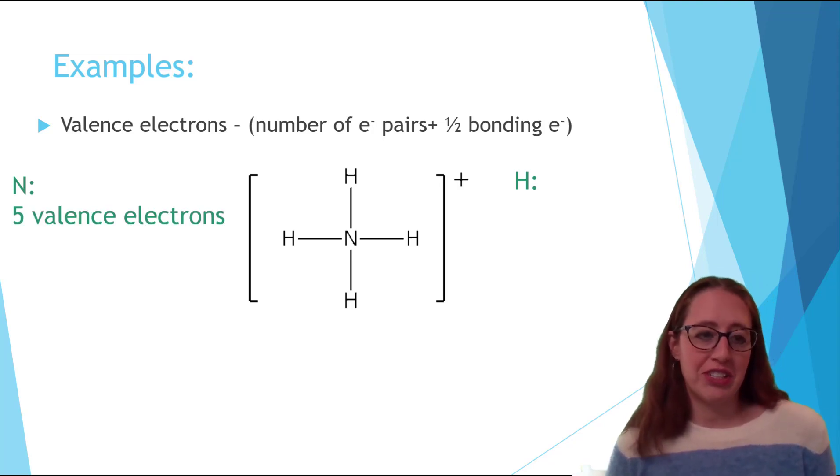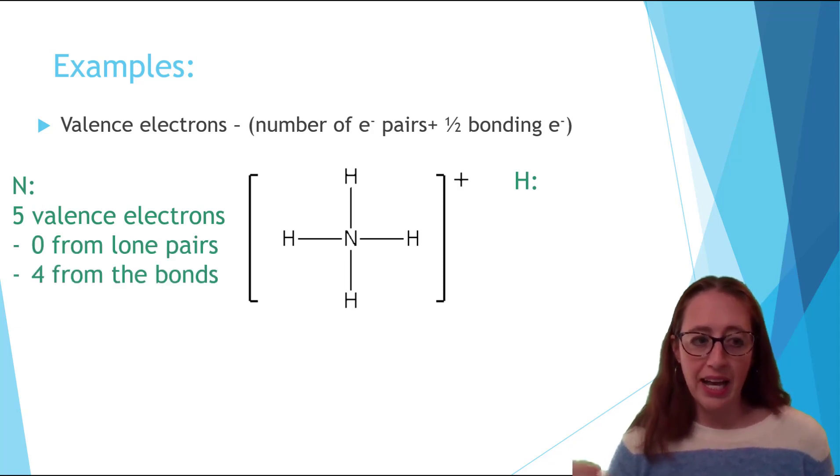So let's do nitrogen first. Nitrogen has five valence electrons which we can get from the periodic table. But as a part of this structure it only has four. It doesn't have any lone pairs but it has four bonds and so it gets one from each bond giving four total. We add this up and that gives us a plus one charge.